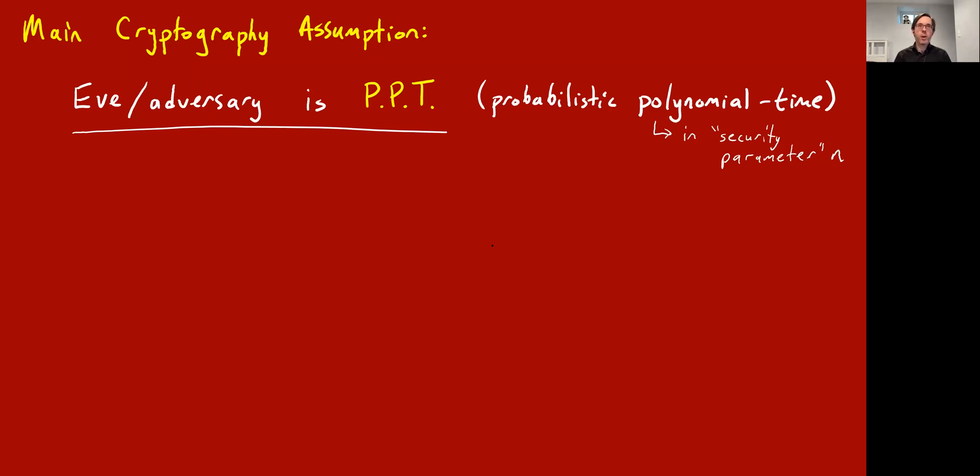I think it's reasonable to assume that we're not concerned about an attack where Eve tries all possible two to the 1,000 keys. So the main assumption made in cryptography theory is that your adversary, or Eve, is, and this is some cryptography terminology, PPT, but that just stands for probabilistic polynomial time algorithm.